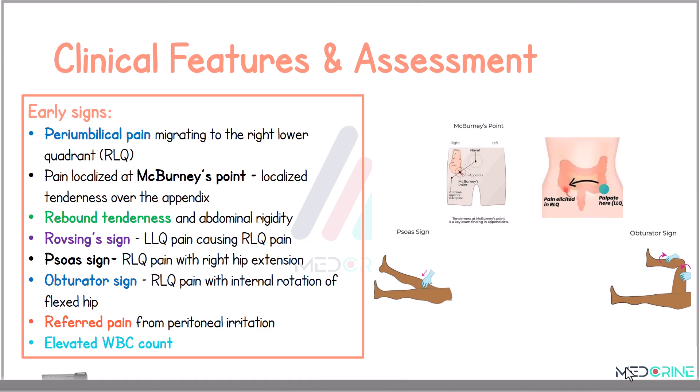The psoas sign indicates right lower quadrant pain on extending the right hip, while the obturator sign is elicited by internal rotation of the flexed hip, also causing pain. There are other signs which suggest peritoneal irritation, and an elevated white blood cell count is commonly observed in these patients.